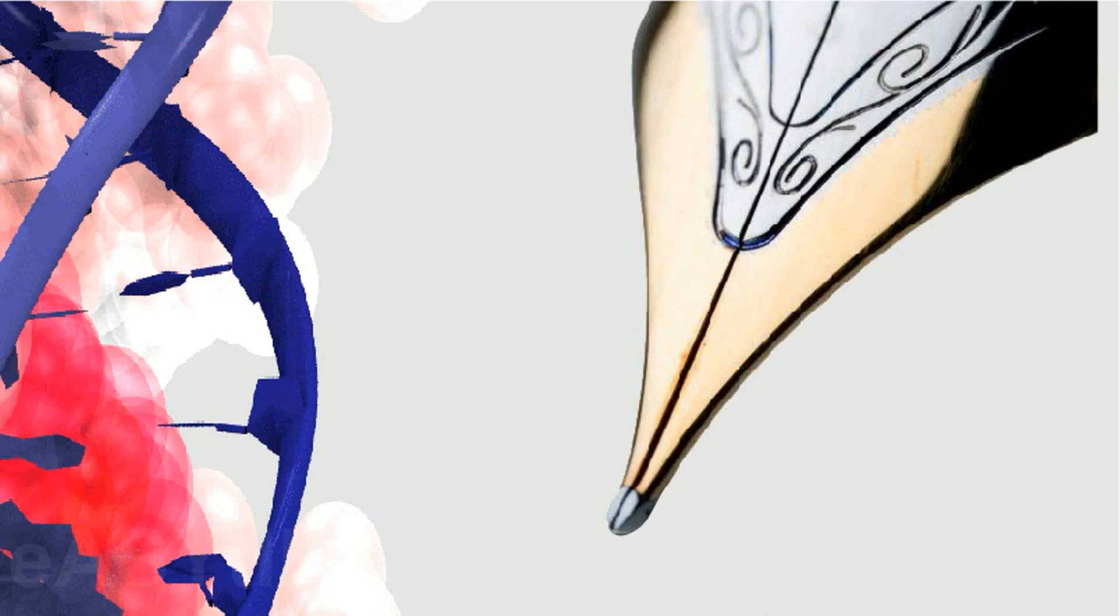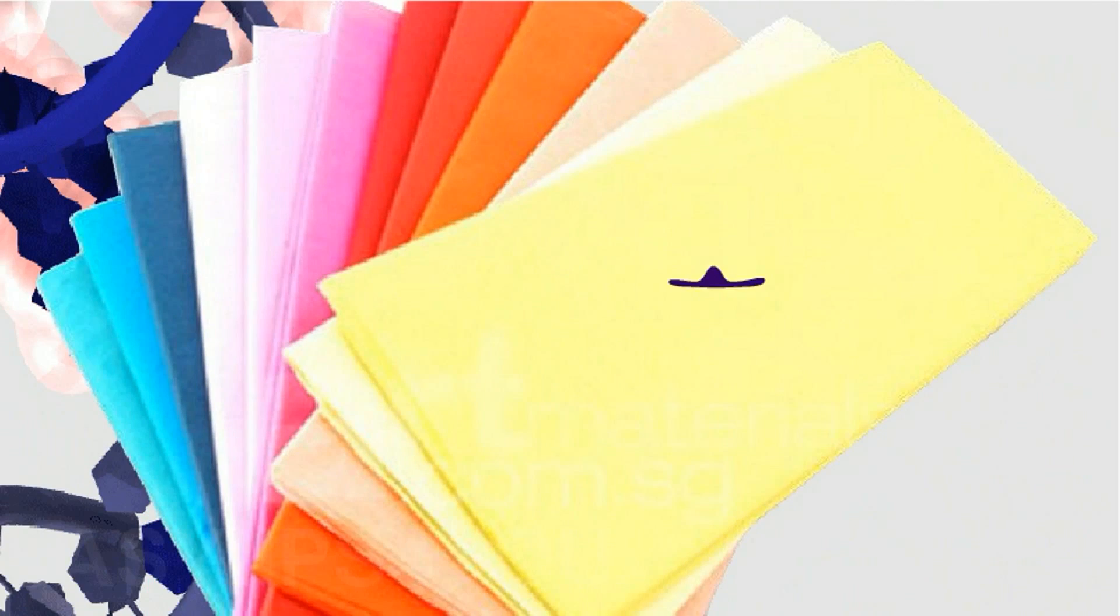Where t is the surface tension of the given liquid, r is the radius of the capillary of the tube, rho is the density of the liquid, and g is the acceleration due to gravity.